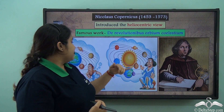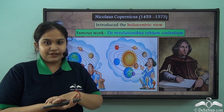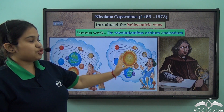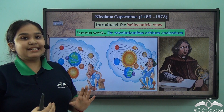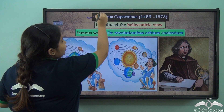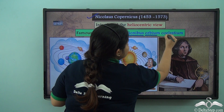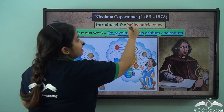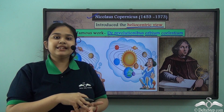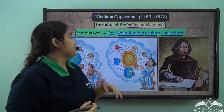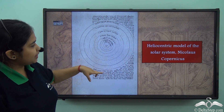Earlier, the idea was that the Earth was at the centre of the universe. Later on, it changed to the fact that the Sun was the centre. This idea was first stated by Nicholas Copernicus in his famous work, De revolutionibus orbium coelestium, where he introduced the heliocentric view — 'helio' meaning the Sun, and 'centric' meaning the Sun being the centre of the universe.